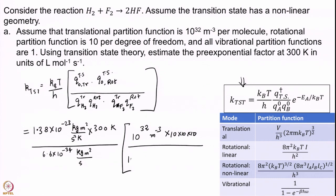H2 translational will be 10³². H2 is linear, so it has 2 rotational degrees of freedom, giving 10². F2 will be exactly the same: translational 10³² meter⁻³ and rotational 10².